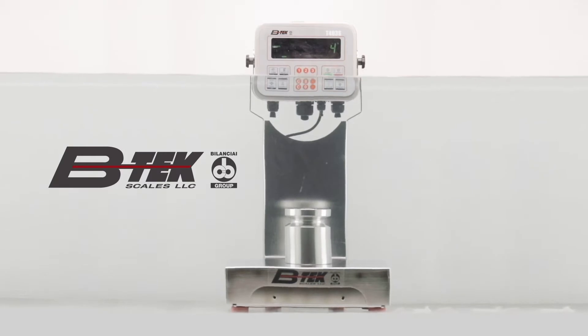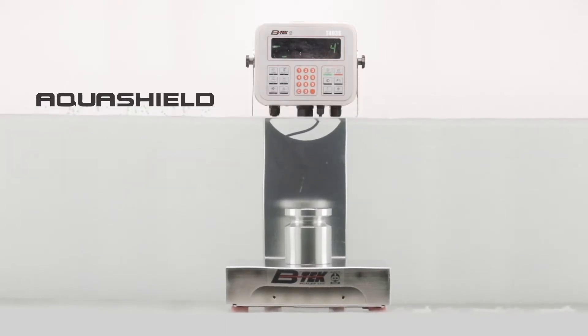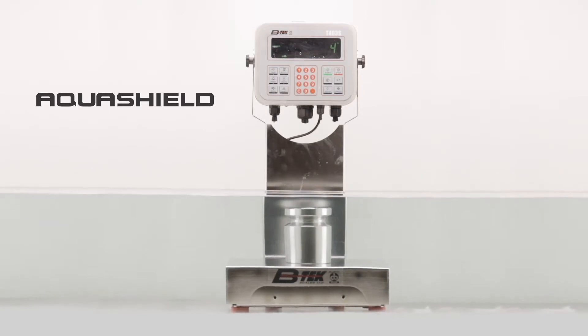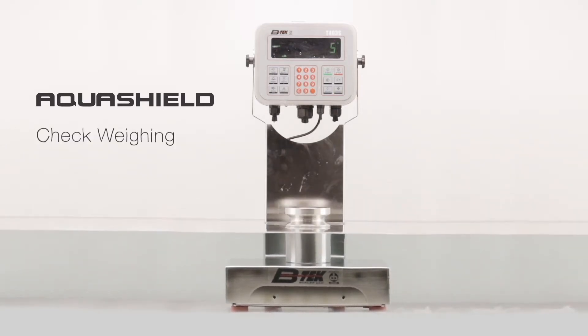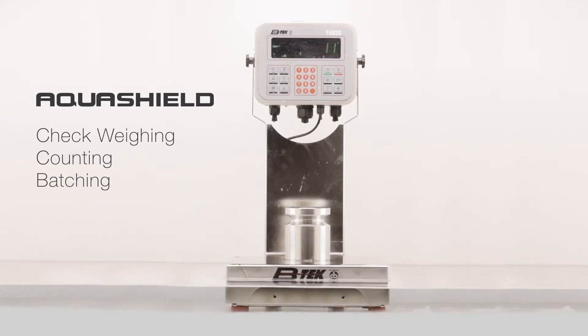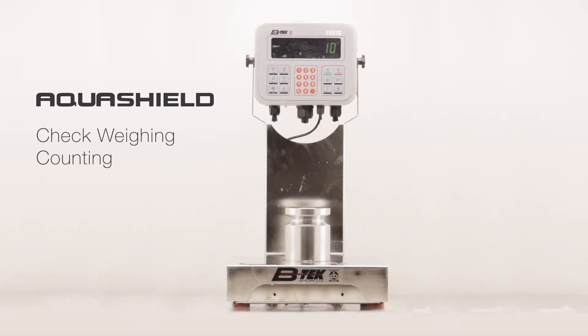Meet the AquaShield, BTEC's breakthrough washdown scale. When combined with BTEC's T-Series Indicator, it allows you to perform check weighing, counting, and batching operations, in addition to general weighments, all within the most demanding washdown environments.